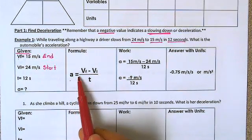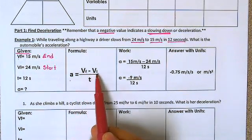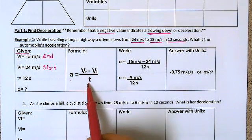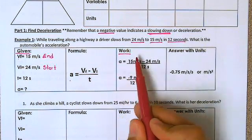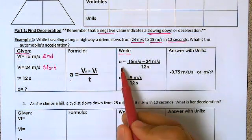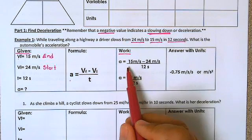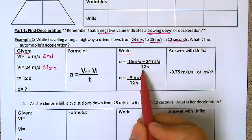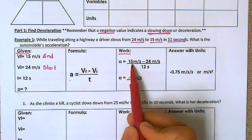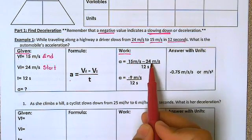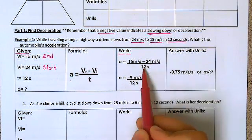Acceleration equals final velocity minus initial velocity divided by time. So we come over here in our work box and we're going to show all of our work. Our first step is to write down what is given into our formula. So the final velocity is 15 meters per second minus our initial velocity of 24 meters per second and all of that is divided by 12.